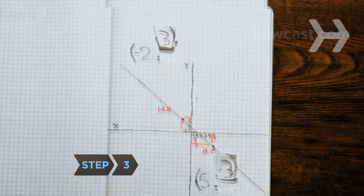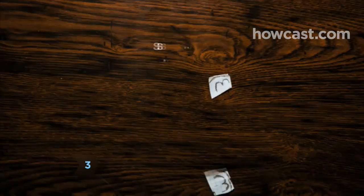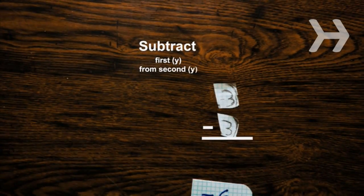Step 3. Subtract the Y-axis location of the first point from the Y-axis location of the second point. The difference is called the rise.